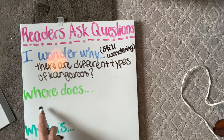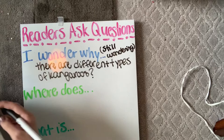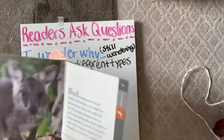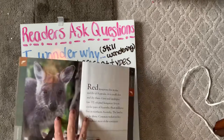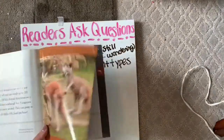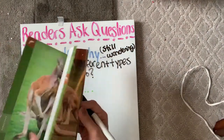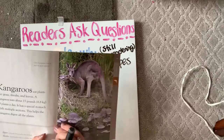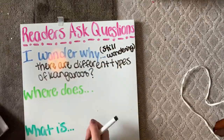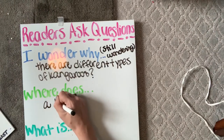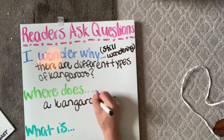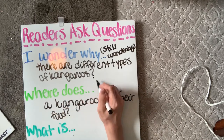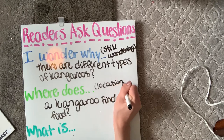Our next sentence frame is 'Where does.' 'Where' deals with the location or the place of something. We know that kangaroos live in Australia — we know that. So I'm going to take it a step further. Readers asking questions is all about taking a step further and seeking information outside of the book. Looking at this page, I can see they're talking about how kangaroos eat different plants. So I'm going to ask: 'Where does a kangaroo find their food?'